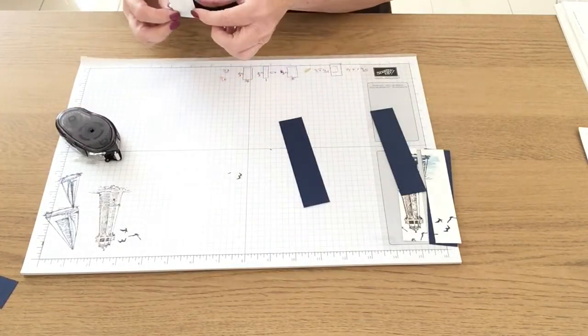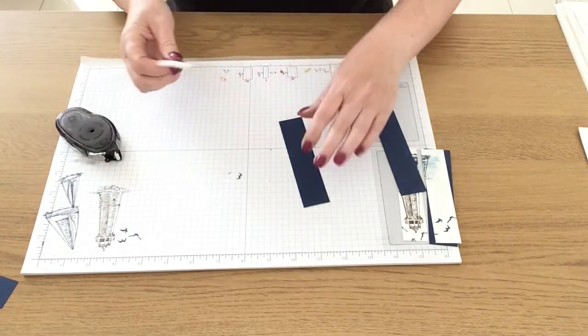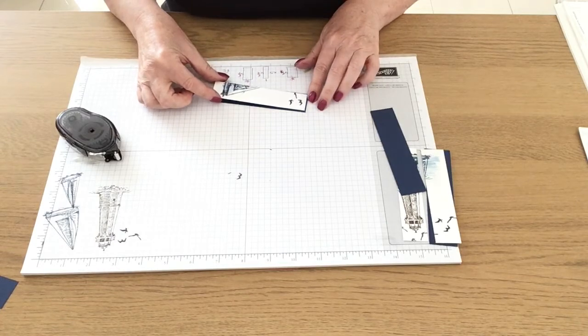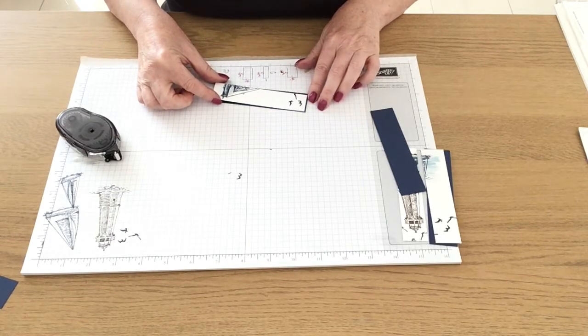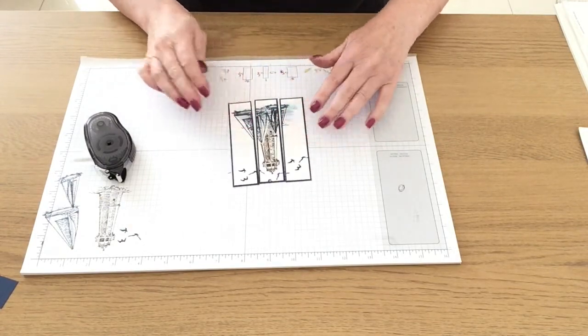I'm going to use Snail and I'm going to stick each one of my white stamped pieces onto the blue Knight of Navy. Okay so that's what I've got so far.